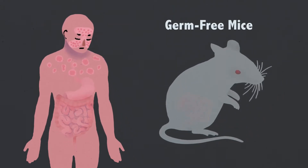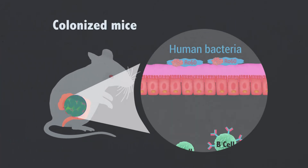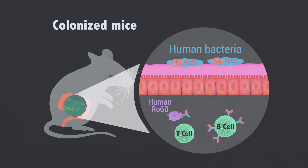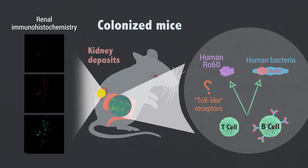When we colonised the gut of germ-free mice with a Ro60 orthologue bacterium that lives in human guts, systemic autoimmune responses to human Ro60 were induced. These cross-reactive immune responses of T and B cells, together with innate triggers via so-called RNA-sensing toll-like receptors, were sufficient to lead to kidney deposits as seen in patients with lupus nephritis.